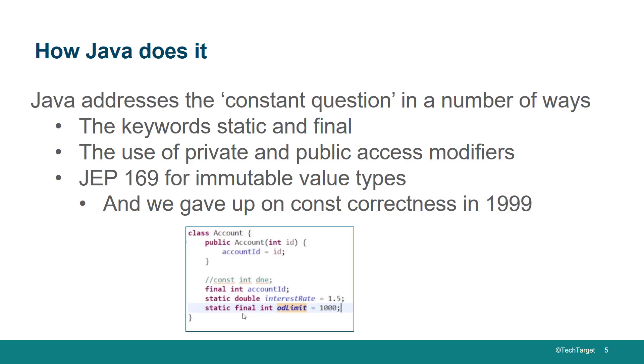So why don't we use const in Java? One reason is because the use of the words static and final gives us more control over the constant rather than having one big hammer to drop that applies equally everywhere. We use the keywords static and final in Java to mark something as constant. That gives us more control.